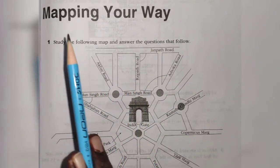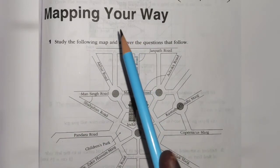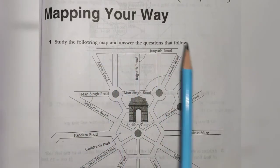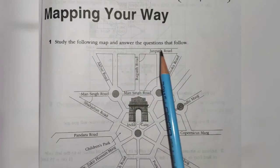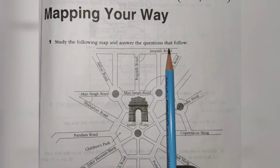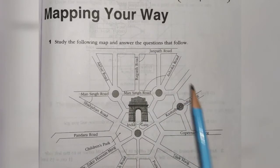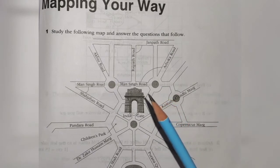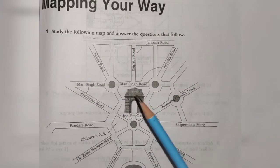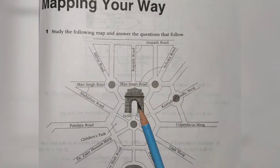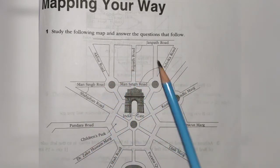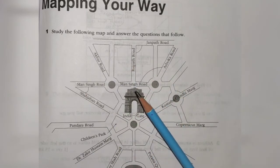This is the first page of your chapter 8 from your practice workbook, Mapping Your Ways. In the first question, we are going to solve a map which has some questions below it. Study the following map and answer the questions. Here is the map of India Gate. I had already taught you one map in your textbook related to this. Here is the India Gate, and here are all the roads which are merging toward it.